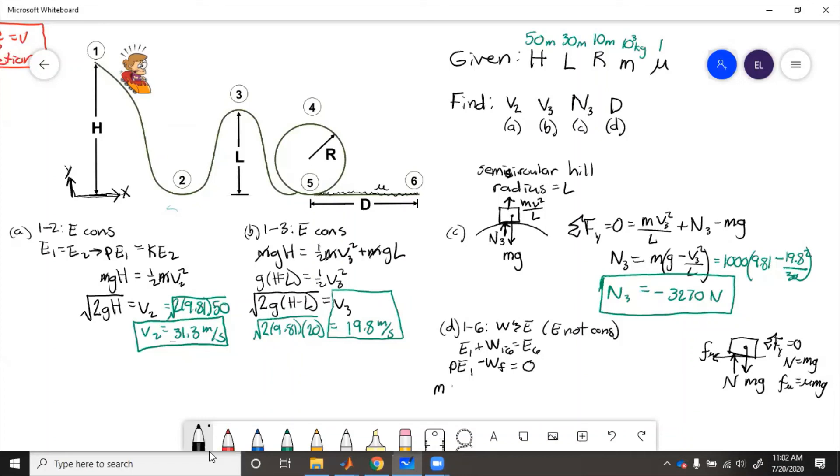So this here means we just put zero. So then we have MGH minus the work by friction, which is mu Mg times that distance. We can cancel the MGs. D equals H over mu. So this equals 50 divided by one equals 50.